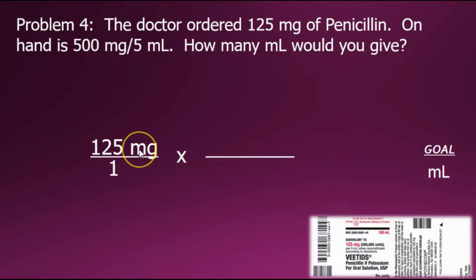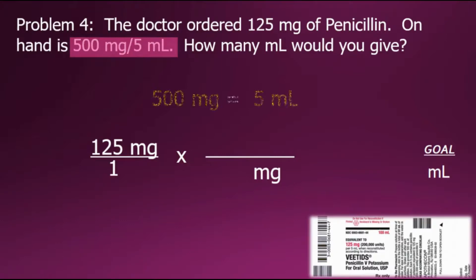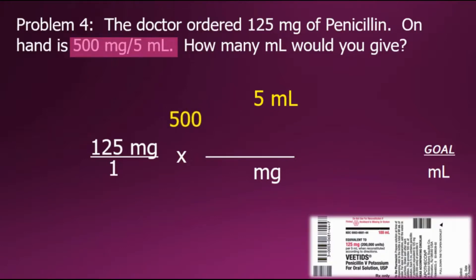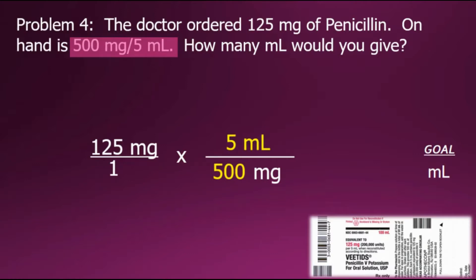We need to set up a conversion factor fraction that will allow us to eliminate milligrams. Since we currently have milligrams in the numerator, our conversion factor needs milligrams in the denominator. The problem gives a relationship between milligrams and milliliters: 500 milligrams per 5 milliliters. Taking these equivalent values and placing the milligram value in the denominator and its equivalent in the numerator creates a fraction with a value of 1, allowing us to convert units. In fraction multiplication, common factors cancel out since they equal 1.